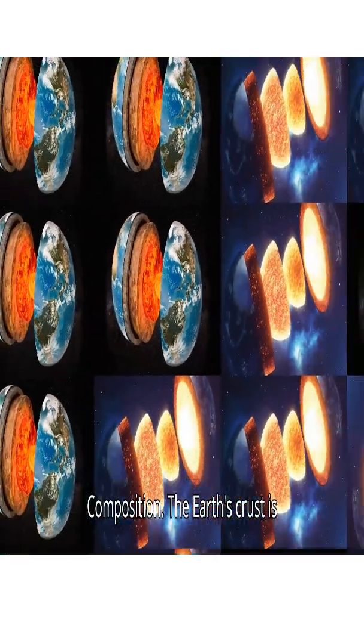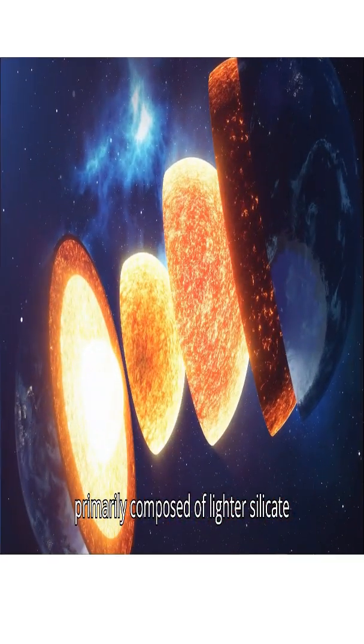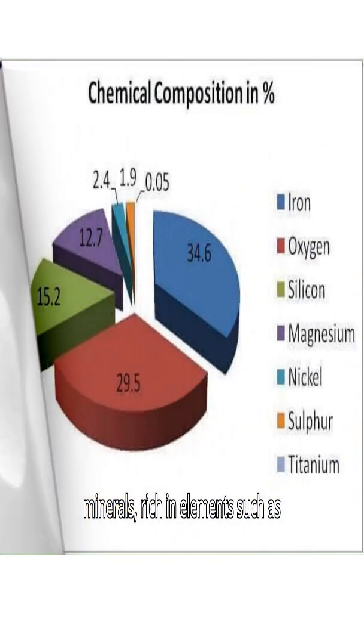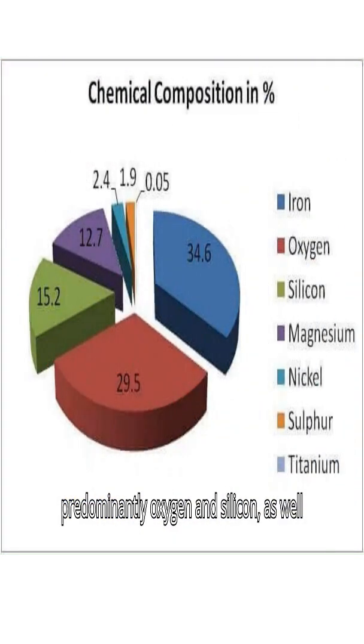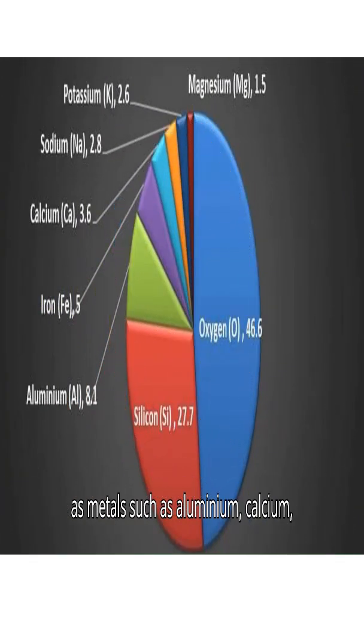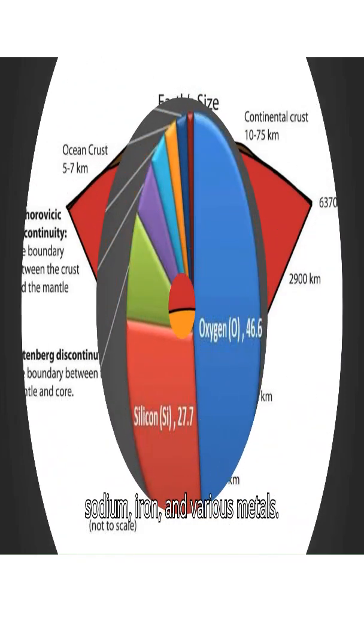The Earth's crust is primarily composed of lighter silicate minerals, rich in elements such as predominantly oxygen and silicon, as well as metals such as aluminum, calcium, sodium, iron, and various other metals.